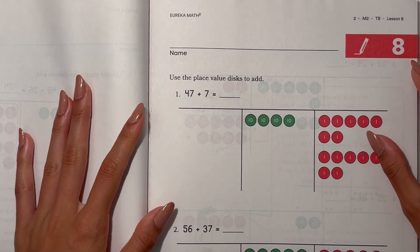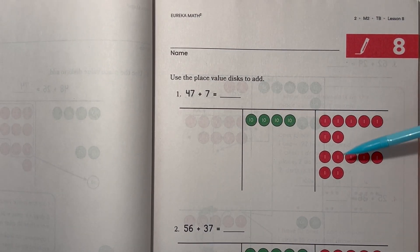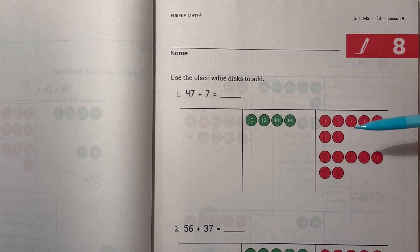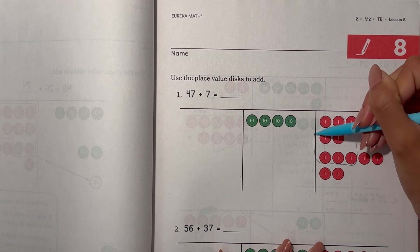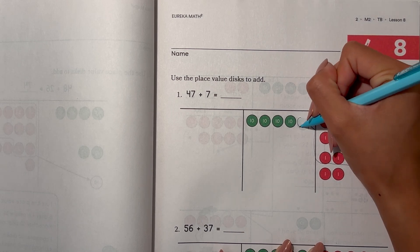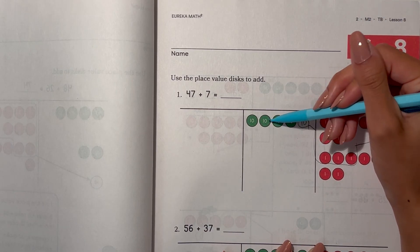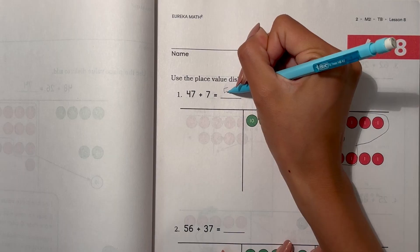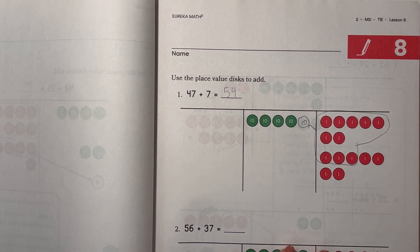Alright, we have 47 plus 7. So we can regroup. We have 7, 8, 9, 10. So 10 ones, this becomes 1 ten in the tens place. So now we have 5 tens and 4 ones. So our answer is 54.